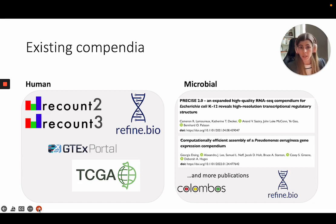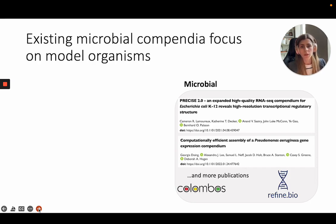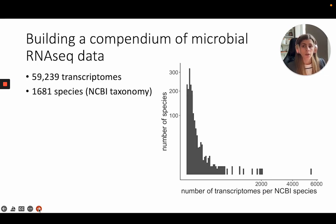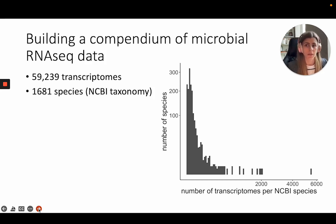There are a lot of existing compendia not just for human but also for microorganisms, but within microorganisms most of the existing compendia have really been focused on model organisms — things like E. coli K12, Pseudomonas aeruginosa, or Staph aureus. So the goal of this project was to expand a compendium to include all of the bacterial and archaeal data that's publicly available on the Sequence Read Archive.